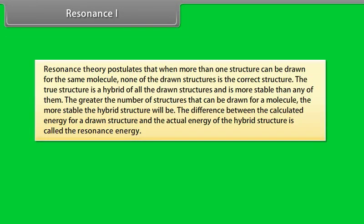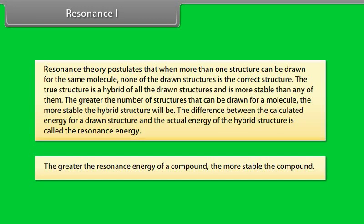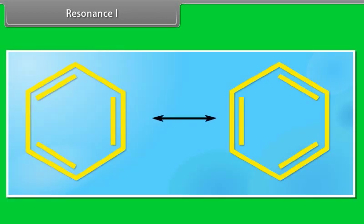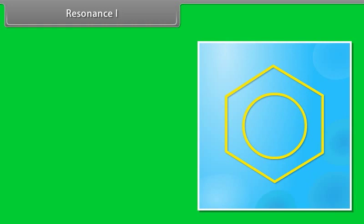Resonance theory postulates that when more than one structure can be drawn for the same molecule, none of the drawn structure is the correct structure. The true structure is a hybrid of all the drawn structures and is more stable than any of them. The greater the number of structures that can be drawn from a molecule, the more stable the hybrid structure will be. The difference between the calculated energy for a drawn structure and the actual energy of a hybrid structure is called the resonance energy. The greater the resonance energy of a compound, the more stable the compound. The two Kekulé structures that can be drawn from the benzene molecule are actually two resonance structures. The hybrid of these structures would be drawn as this.